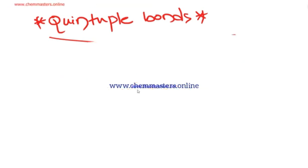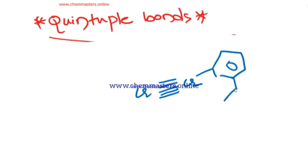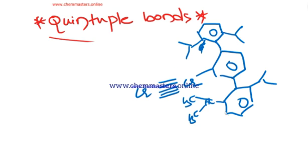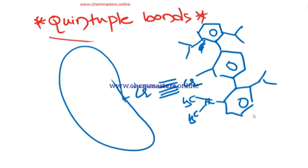Let me draw its structure. Here chromium-chromium has five bonds between them with a bulky ligand. The structure has CH groups with CH3 substituents. The same bond pattern is observed here. This is the ligand observed on each of the chromium.